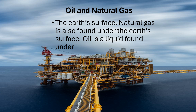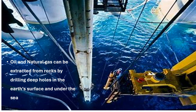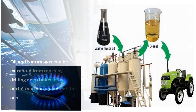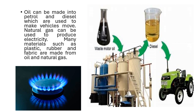Oil and natural gas are found under the earth's surface. They can be extracted from rocks by drilling deep holes in the earth's surface and under the sea. Oil can be made into petrol and diesel, which are used to make vehicles move. Natural gas can be used to produce electricity. Many materials such as plastic, rubber, and fabric are made from oil and natural gas.